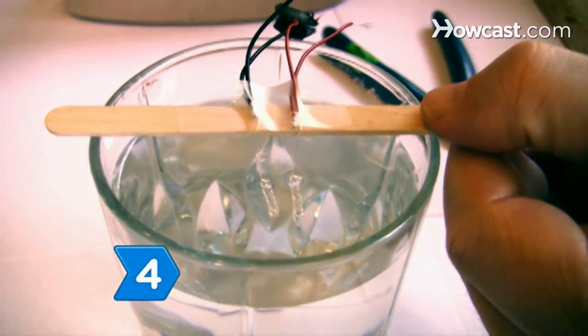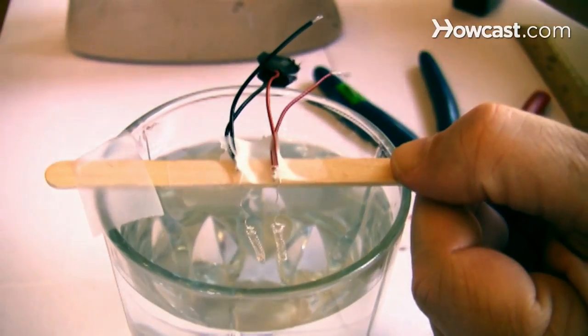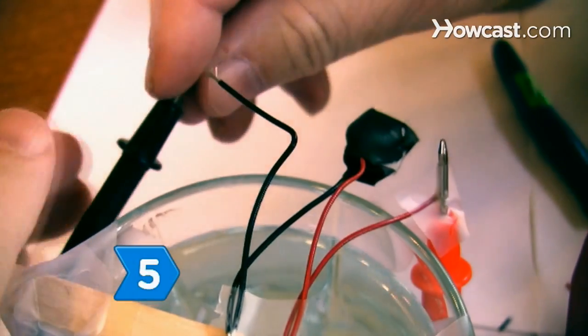Balance the popsicle stick on the rim of the glass of water and tape the ends of the stick to the rim of the glass. Make sure only the coiled electrodes hang into the water, not the twisted leads. Step 5.